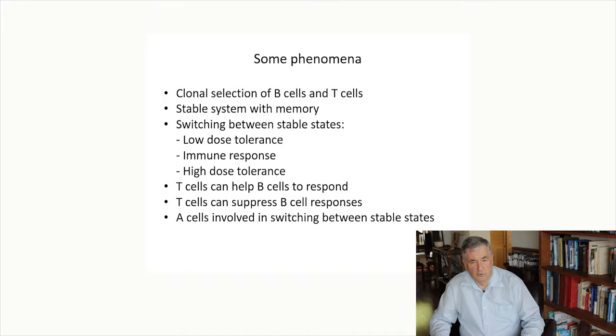So some phenomena that we need to be able to understand in terms of those components. First of all, we have clonal selection of B cells and T cells. Those of you who have taken a little bit of immunology are familiar with clonal selection as the basis for memory in the immune system. But in addition, network theory takes us one step further in understanding memory, both for immunity and for self-tolerance.